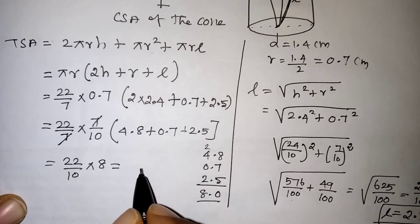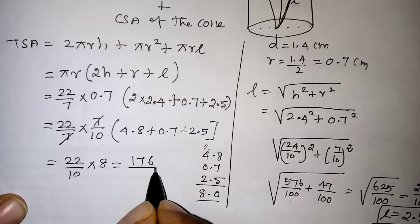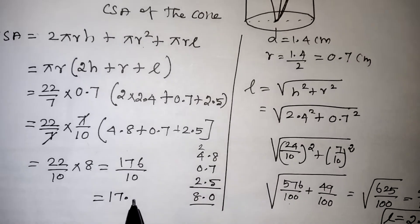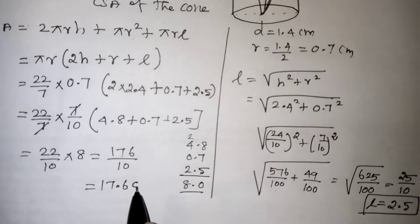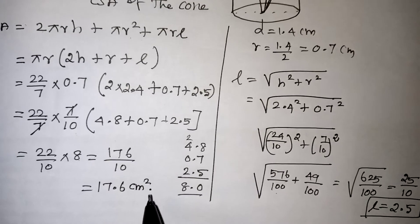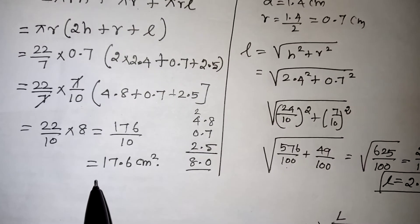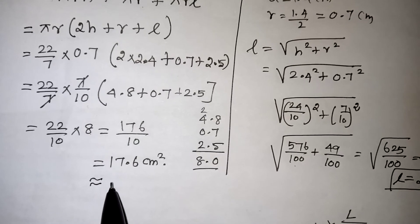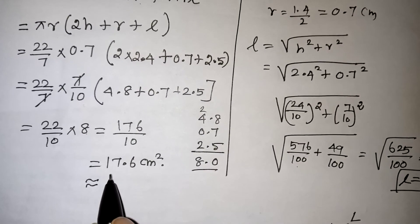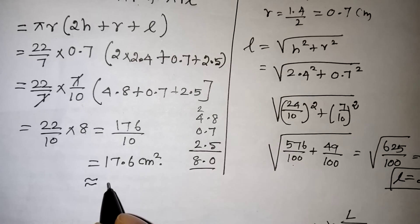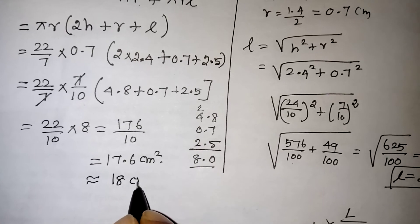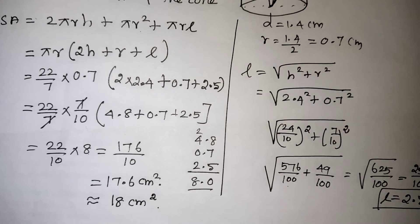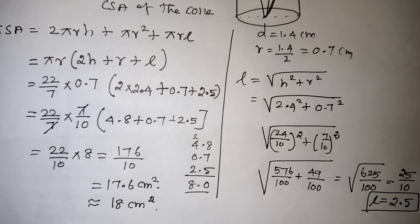So we have 22/10 multiplied by 8, which gives 176/10 = 17.6 cm². Since the question asks for the nearest cm², 17.6 is nearest to 18. So the total surface area of the remaining solid is 18 cm². That is all, students. Thank you for watching. If you like our video, subscribe to our channel for more videos.